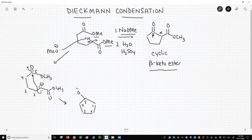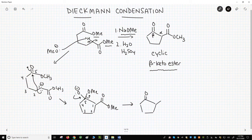which is a tetrahedral intermediate. The O- kicks out the methoxy. That forms our beta-ketoester.